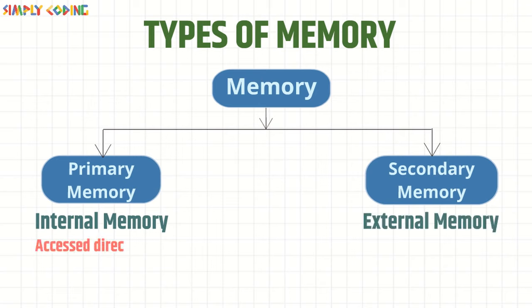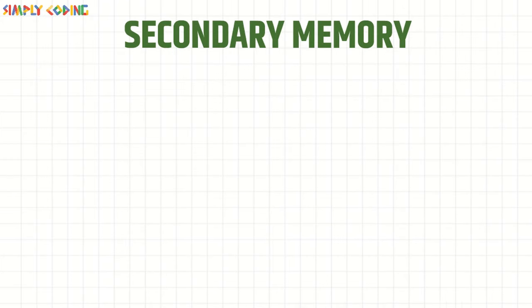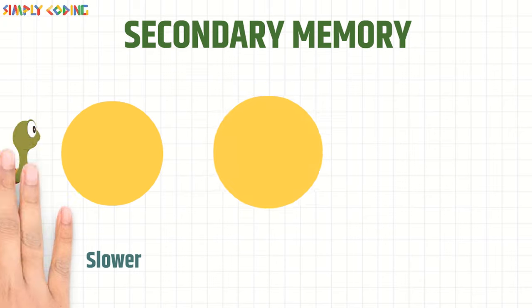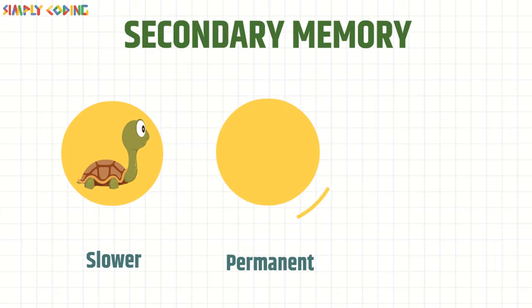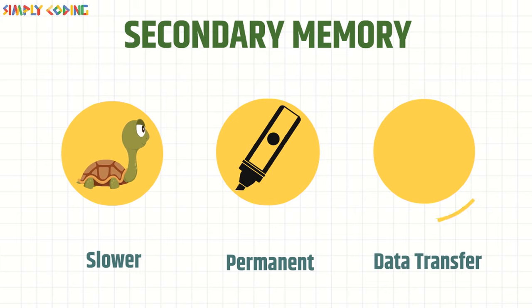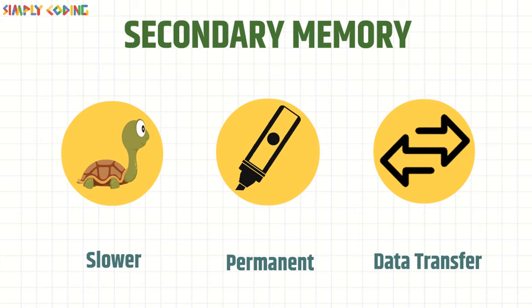While the primary memory is accessed directly by the CPU, secondary memory is backup memory used for long-term storage of data. Its key characteristics are: it is slower than the primary memory, data stored is permanent, so it is used for storage and backup, and it helps in transferring data from one computer to another.